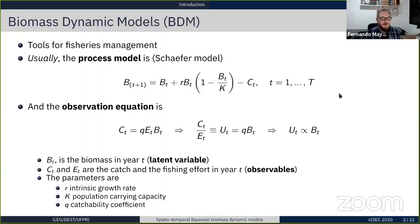The observation equation says that catches depend on the biomass of the population, the fishing effort, and the catchability coefficient q. If you divide catch by effort, we get the catch per unit effort, denoted by U, which is directly proportional to the population abundance up to a constant.